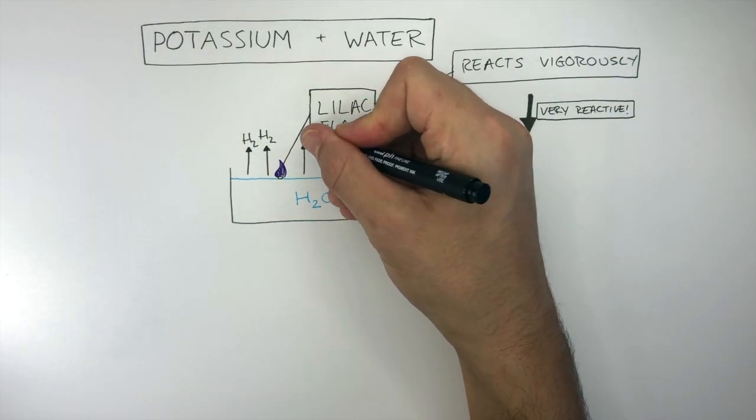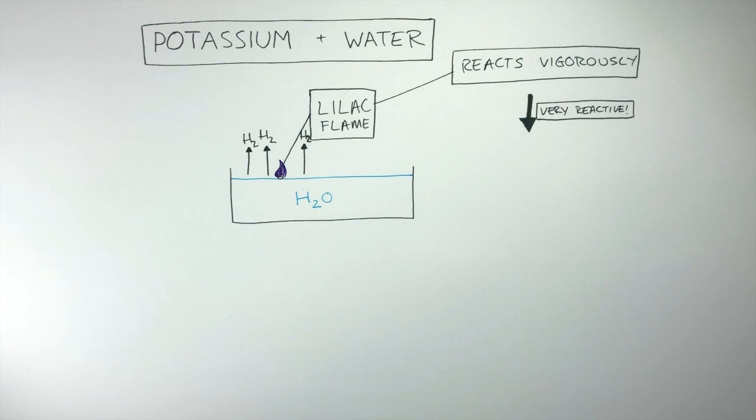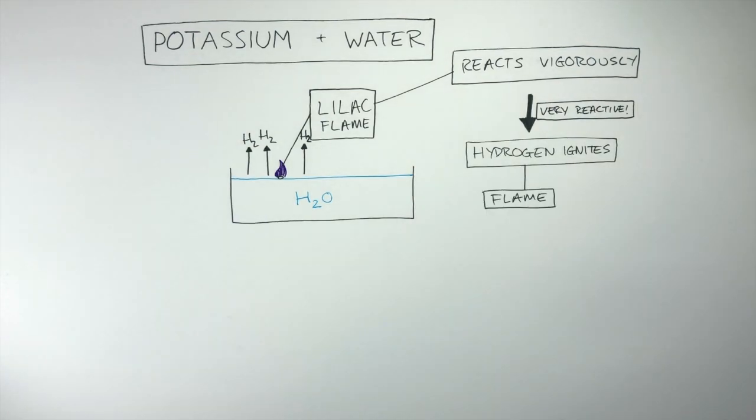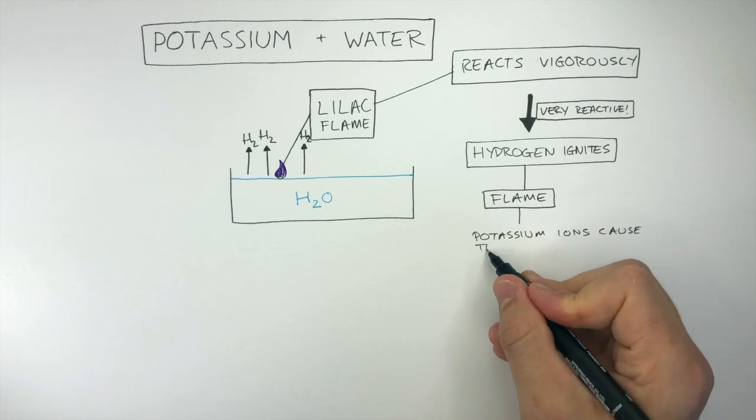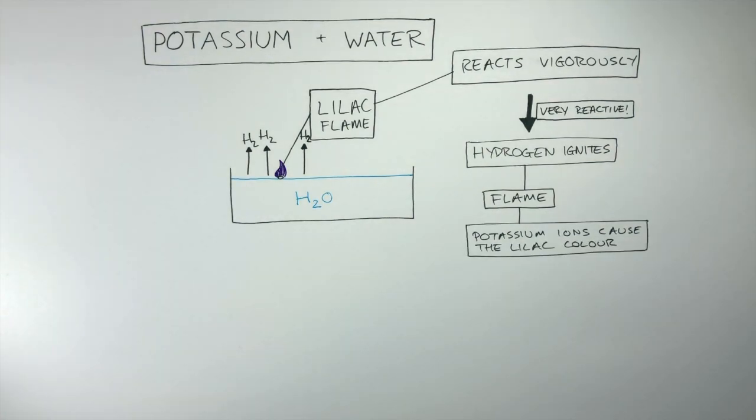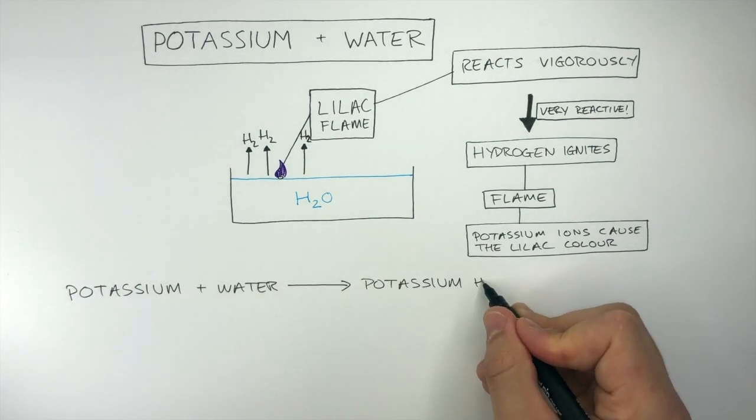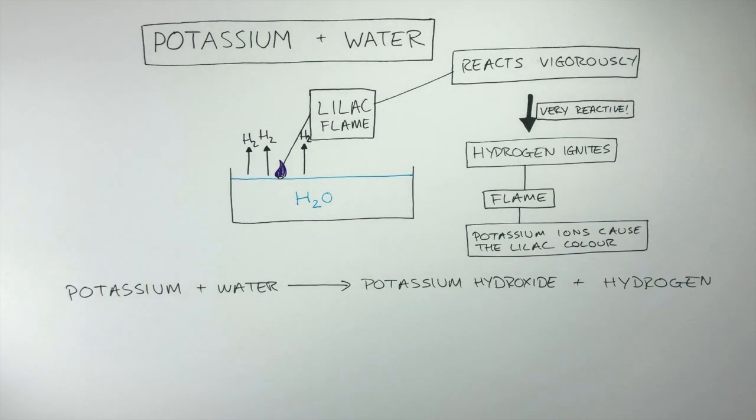Hydrogen gas is given off. And because there is so much heat due to the vigorous reaction, the hydrogen ignites, producing a flame. And it's the potassium ions which cause the lilac color. The word equation is potassium + water → potassium hydroxide + hydrogen. Pause the video here to write a balanced symbol equation and the answers will follow. You may have noticed the balanced symbol equation is always the same when an alkali metal reacts with water. The only thing you change is the alkali metal.